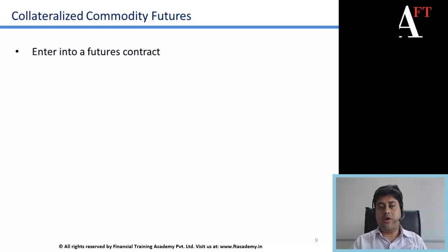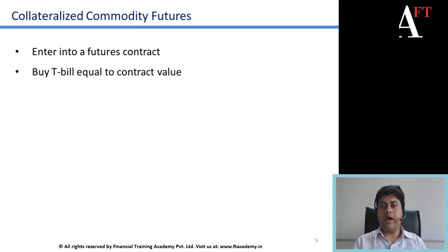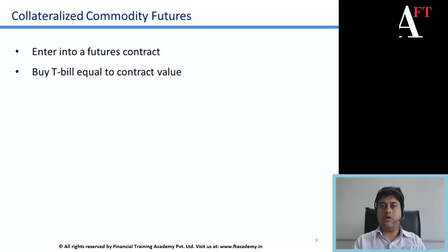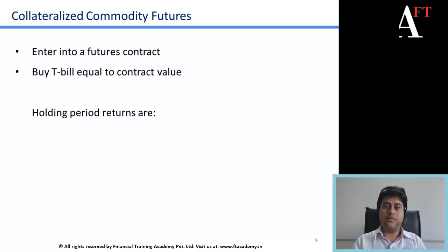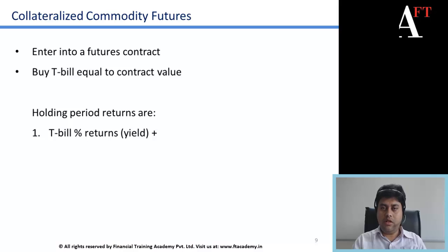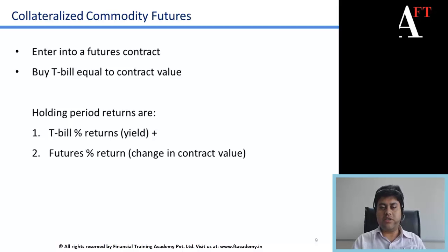Collateralized commodity futures involves entering into a futures contract while simultaneously buying a T-bill with a value equal to the contract value, which serves as collateral for that futures contract. Most futures contracts require the buyer to post margin or collateral to honor the contract, and T-bills are commonly accepted. The holding period returns are the T-bill percentage return — that is, the yield on the T-bill — plus the futures percentage return, which is the change in contract value over time.